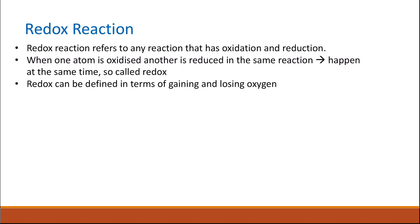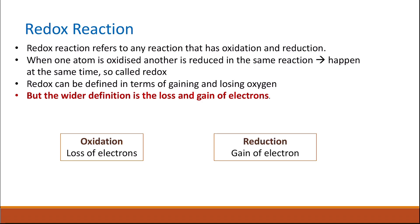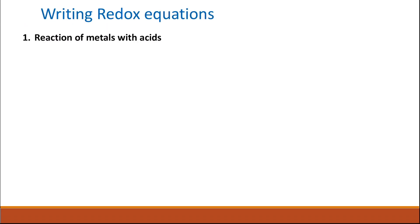A wider definition of redox, oxidation and reduction, is in terms of the loss and gain of electrons. Oxidation is defined as loss of electrons, and reduction is defined as gain of electrons. We can use this to write redox equations and determine whether an element has been oxidized or reduced in a reaction.